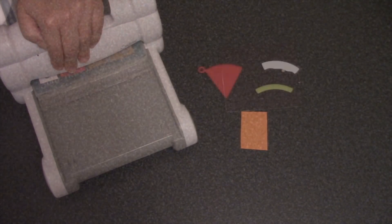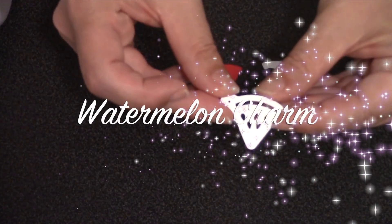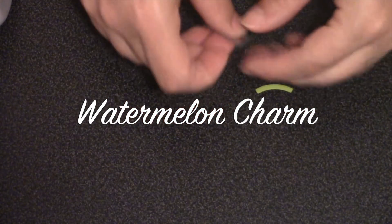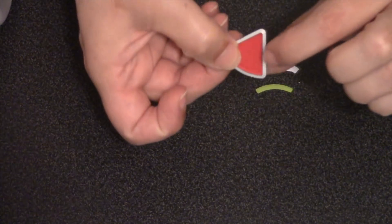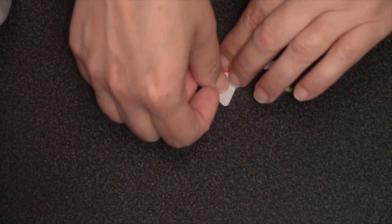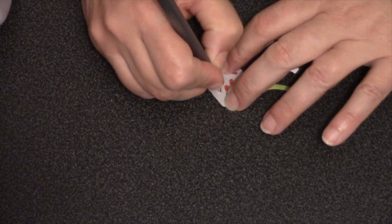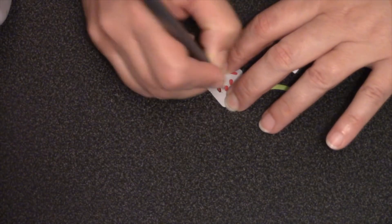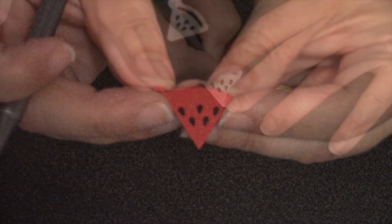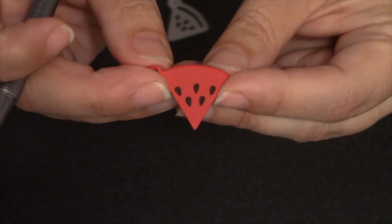Let's start with a watermelon charm. There are three dies used to make this charm, and the main one that cuts the watermelon slice itself has an optional stencil feature to be able to add the seeds. So you would leave that paper in the die and then go in with a black pen and draw in all of the seeds.